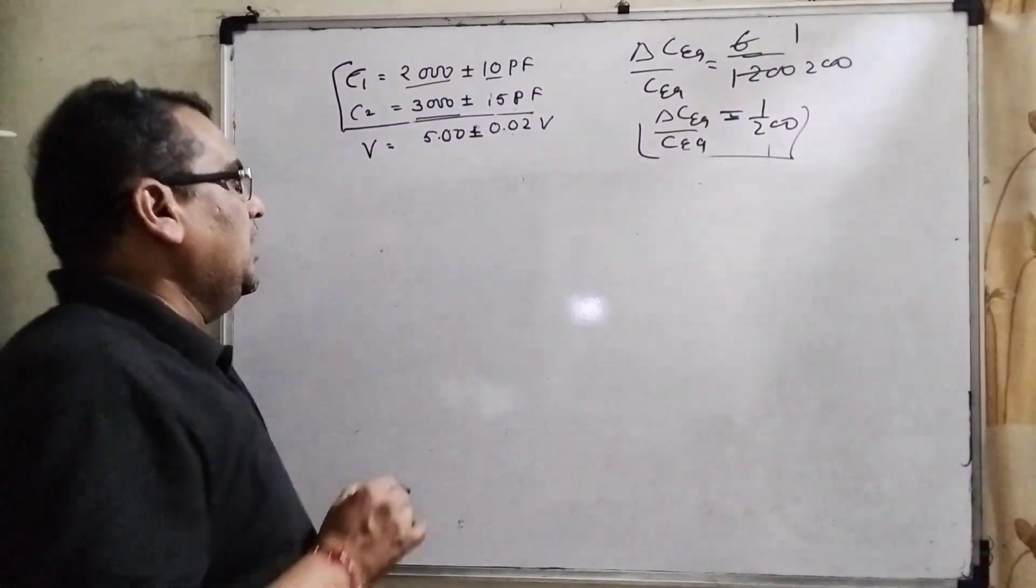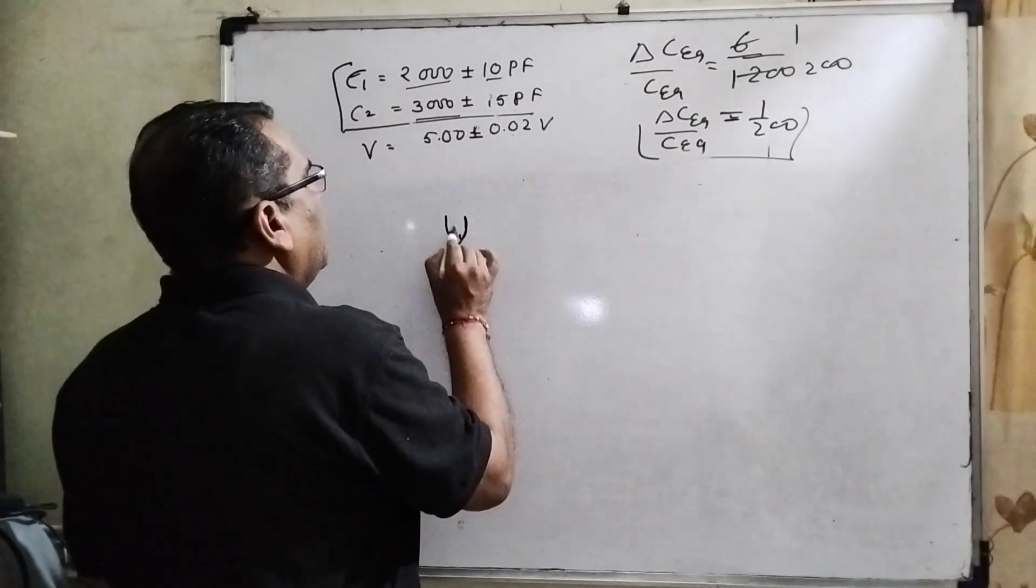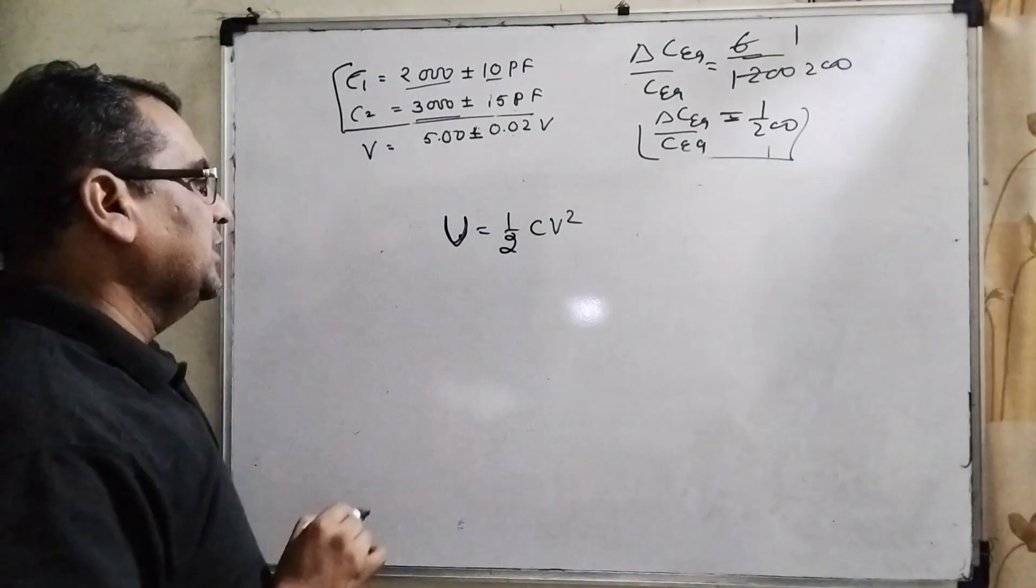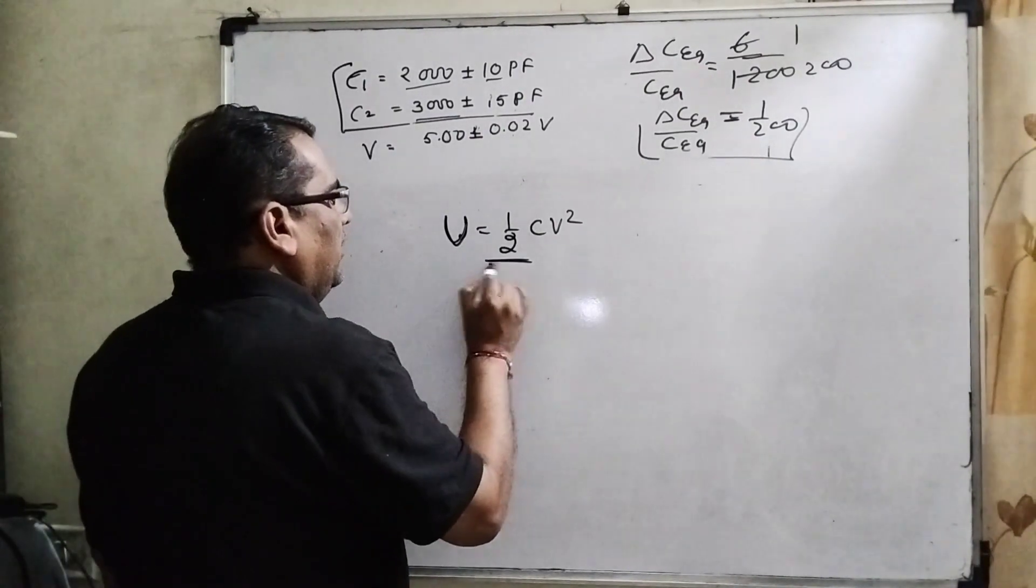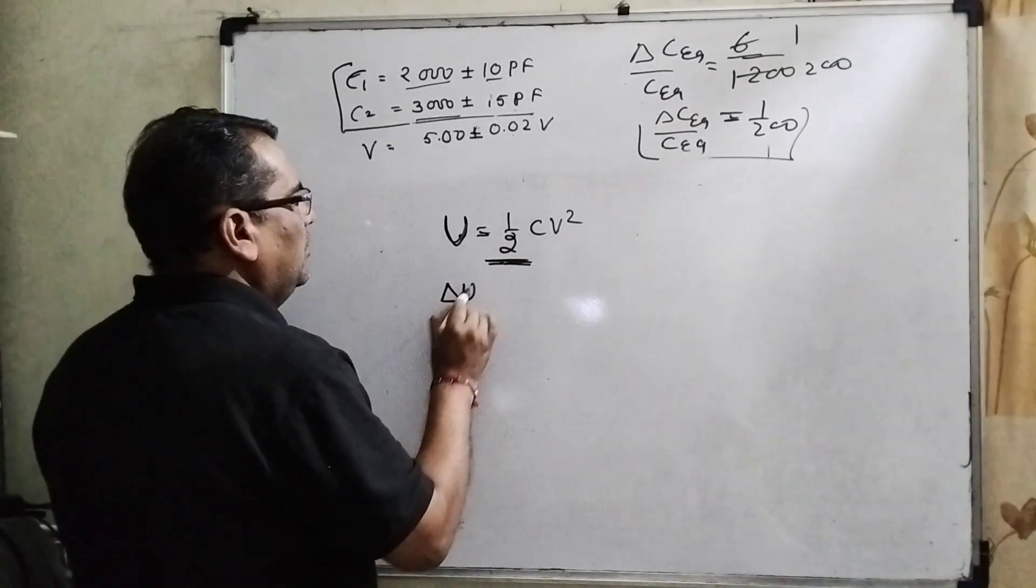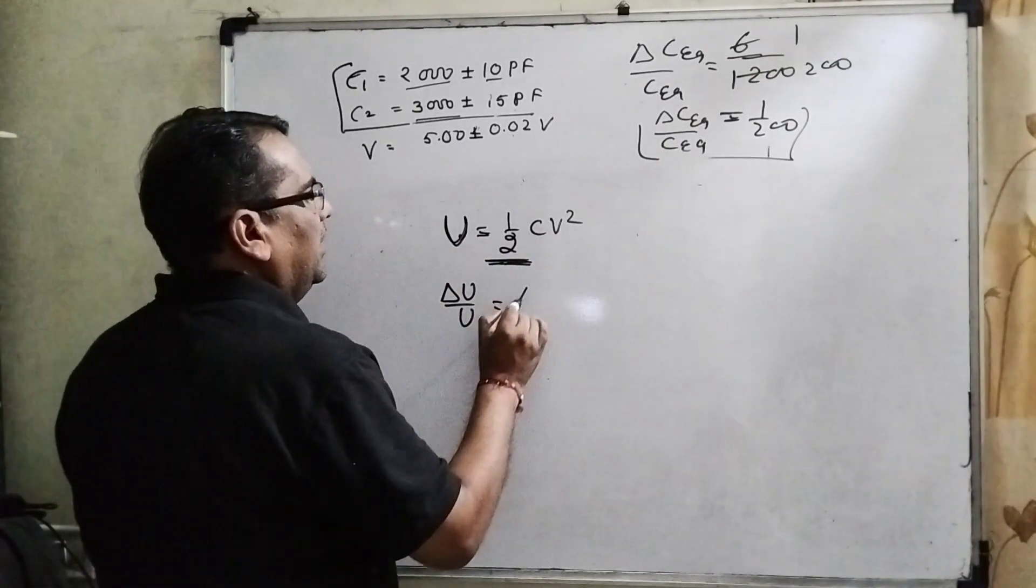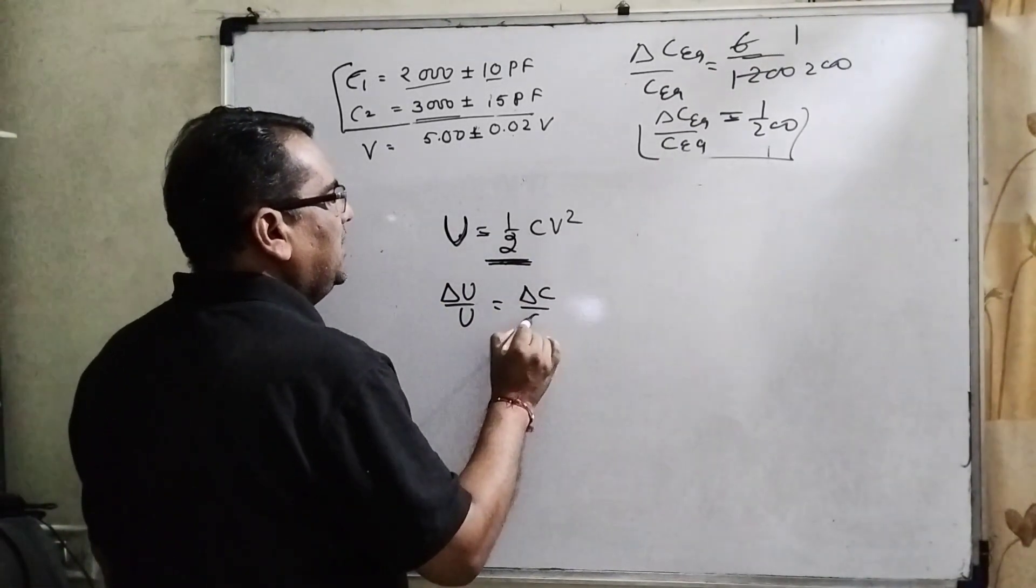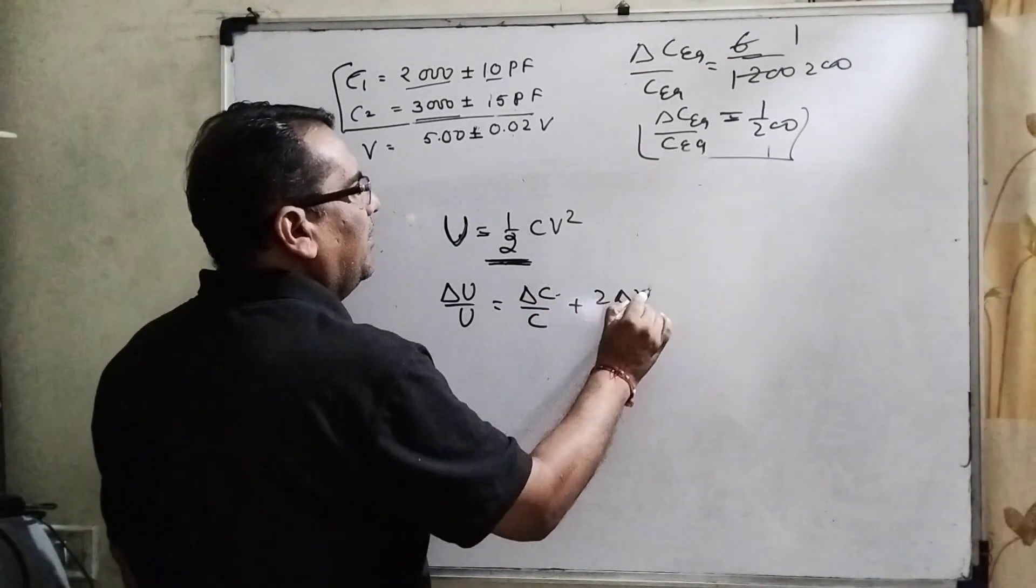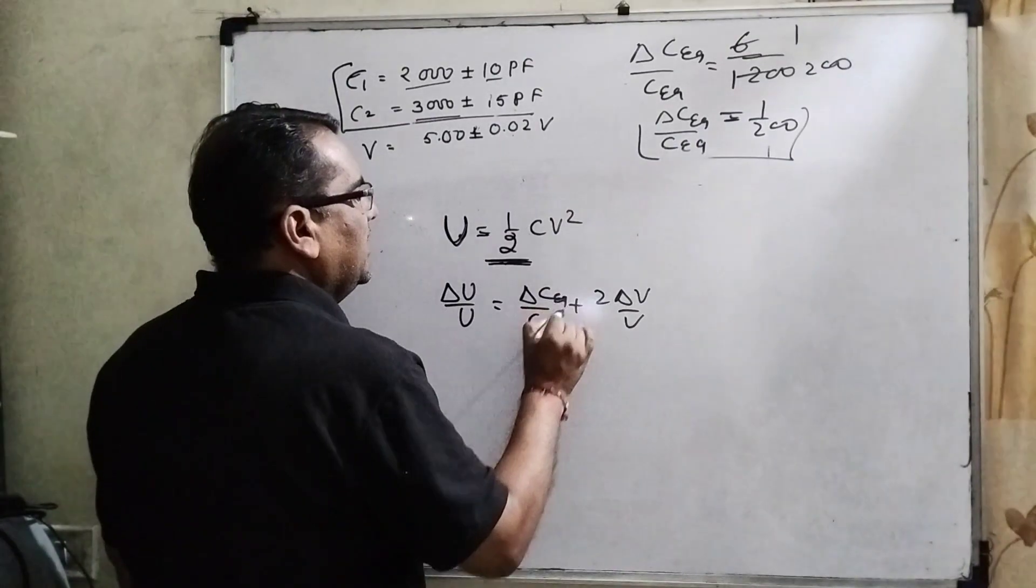Now we have to find the energy of the capacitor: U equals 1 by 2 CV squared. Now differentiating both sides, constant terms will escape. So delta U upon U equals delta C upon C equivalent plus 2 delta V upon V.